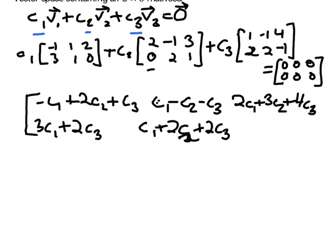The last column of row 2 gives us 0 times C1 plus 1 times C2 minus 1 times C3. All of this is equal to the zero matrix, whose entries are all zero. So that means each of these entries must equal zero, giving us really six equations.